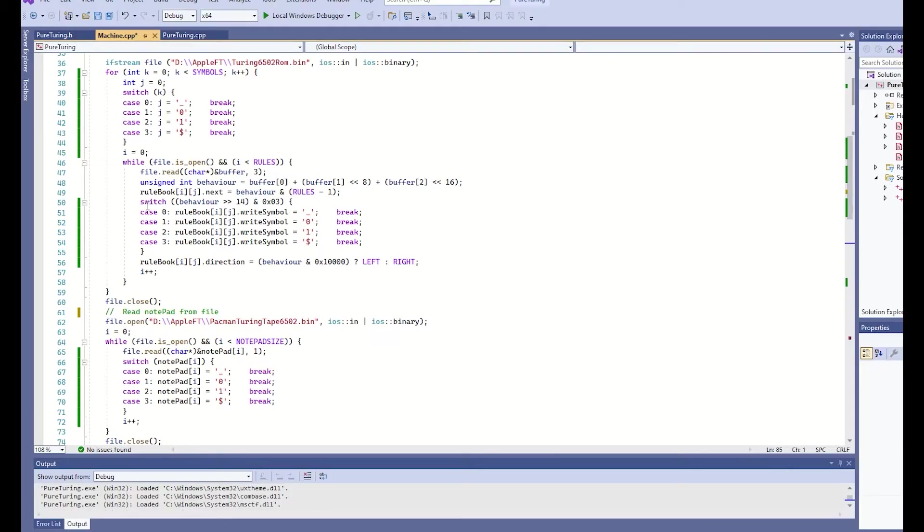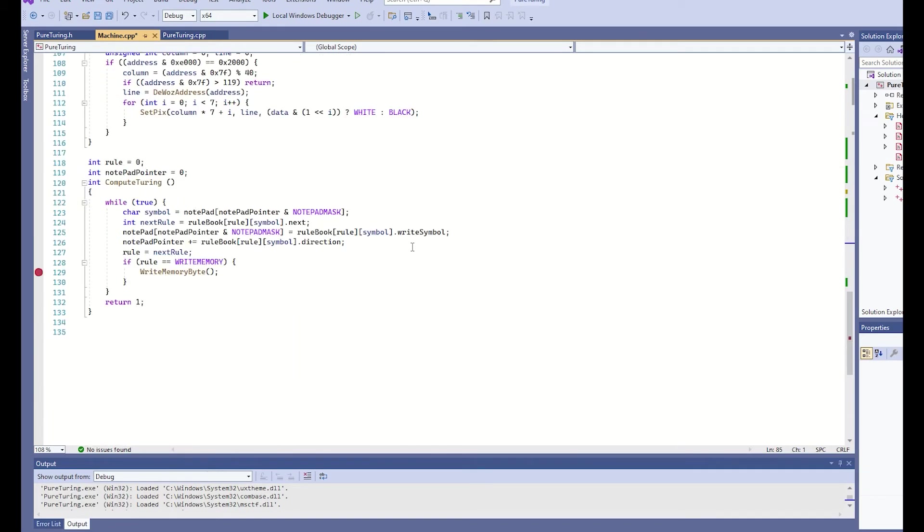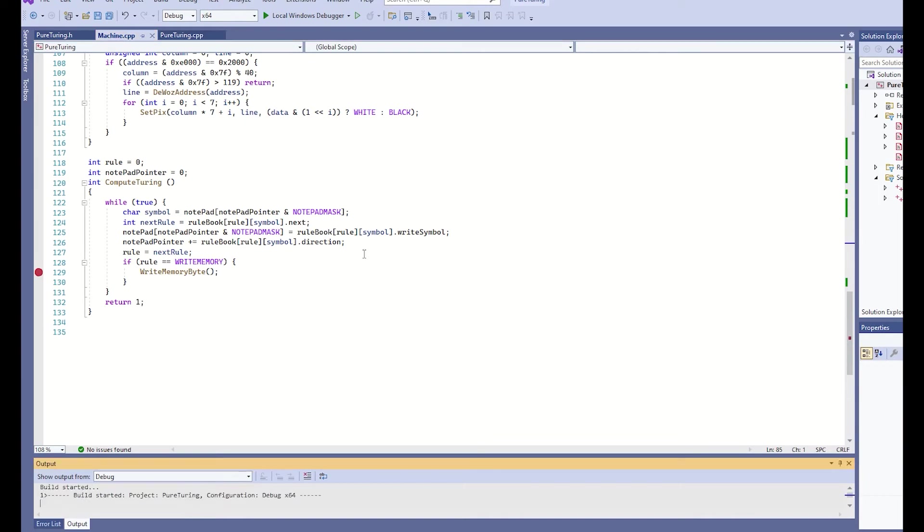Without a lot of effort, I can actually make it so that the simulation uses these four ASCII characters, underscore, zero, one and dollar. This has absolutely no impact on the inner loop for the code for the Turing machine. I'll run it again.